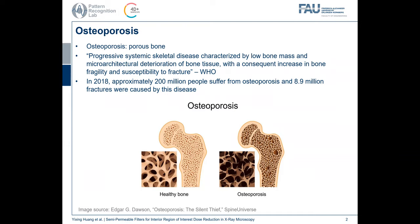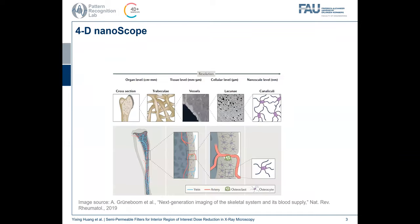Therefore, research on osteoporosis has great value. As we can see, bone is a very complex tissue which contains structures from micro scale in centimeters and millimeters down to the nanoscale. Therefore, in order to study and investigate multi-scale bone tissue, different imaging techniques are required.